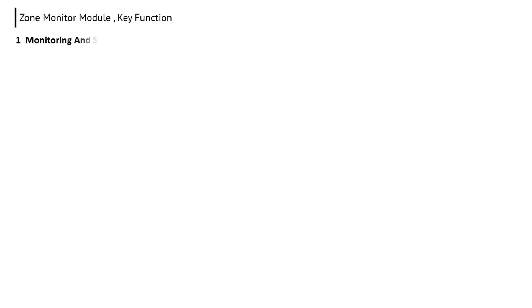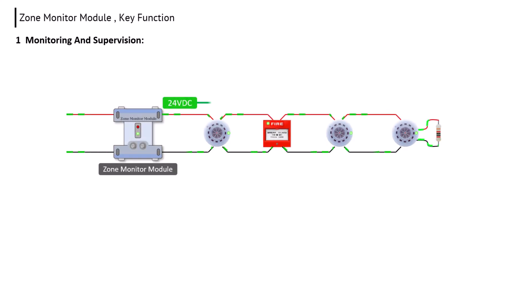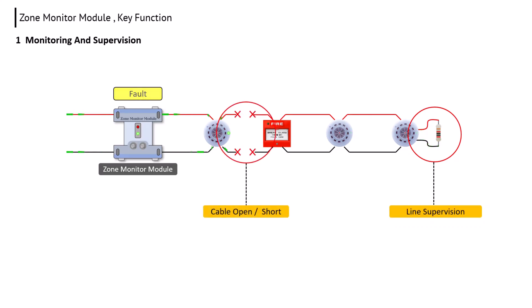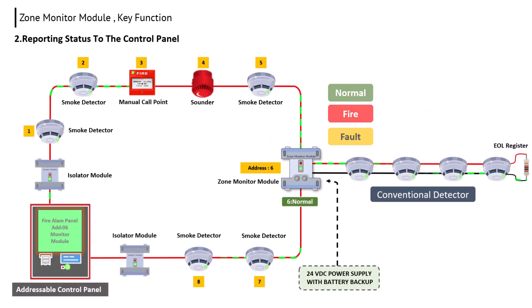First function — monitoring and supervision: the zone monitor module supplies power to the two-wire detector and monitors it. There is an end-of-line resistor in the zone circuit; this performs line supervision. If there is a wire open or short between the zone monitor module and the device, it monitors that and the zone monitor module indicates a fault. Second function — reporting status to the control panel: the status of the connected detector — whether normal, fire alarm, trouble, open, or short — is sent to the fire alarm panel with the address.